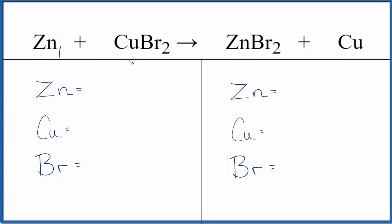let's count up the atoms: one zinc, one copper, and two bromine atoms in the reactants. In the products, we have one zinc, two bromine, and one copper.